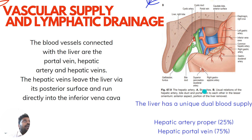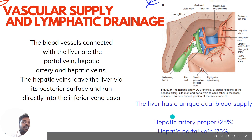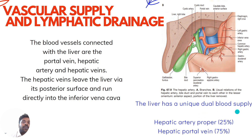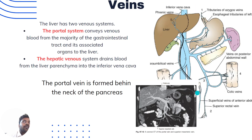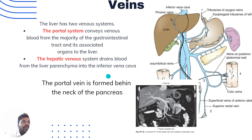Vascular supply and lymphatic drainage: the liver has a unique dual blood supply. It receives its nutrition from the hepatic artery and the portal vein — the hepatic artery contributing 25% and the portal vein 75%. There are two venous systems: the portal vein conveys venous blood from the majority of the gastrointestinal tract, and the hepatic veins drain blood from the liver parenchyma to the inferior vena cava.